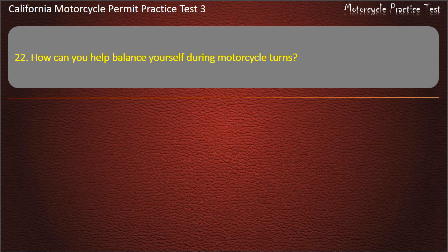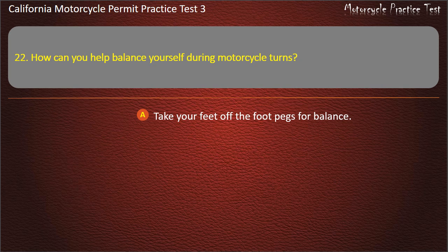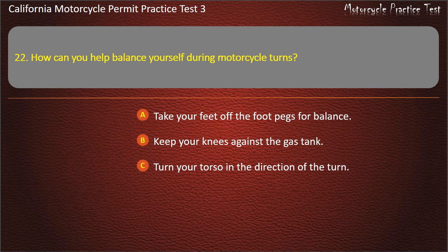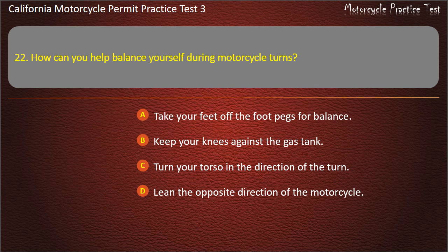Question 22. How can you help balance yourself during motorcycle turns? Take your feet off the foot pegs for balance, keep your knees against the gas tank, turn your torso in the direction of the turn, or lean the opposite direction of the motorcycle. Answer: Keep your knees against the gas tank.